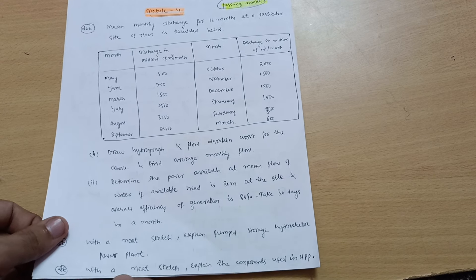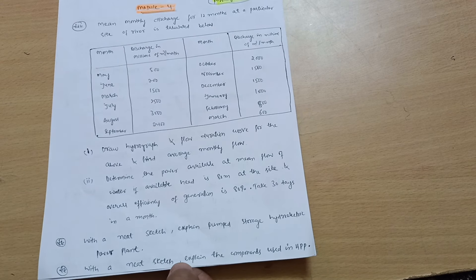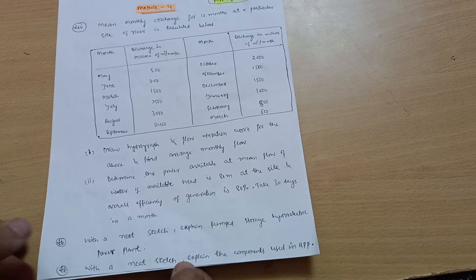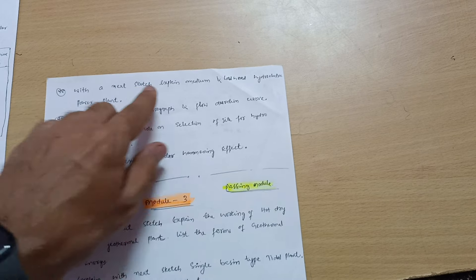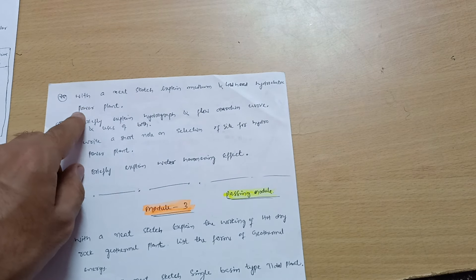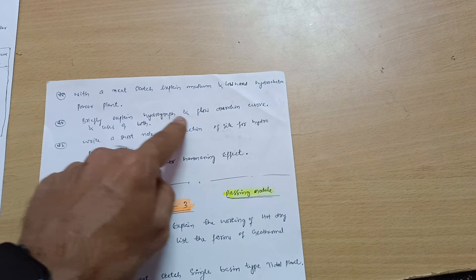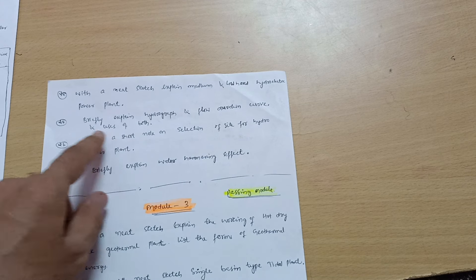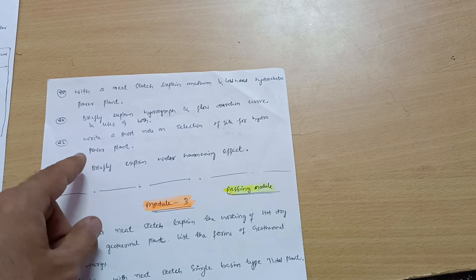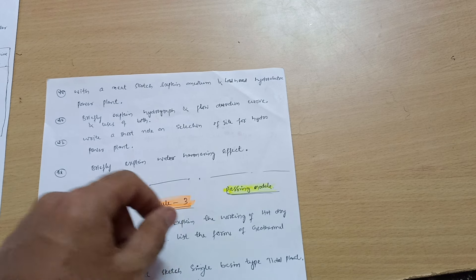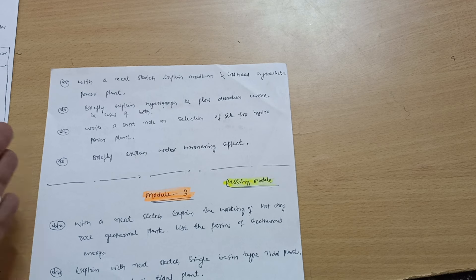Next is with neat sketch explain pumped storage hydroelectric power plant. With neat sketch explain the components used in hydro power plant. Next four questions from Module 4: with neat sketch explain medium and low head hydraulic power plant, briefly explain hydrograph and flow duration and uses of both, write a short note on selection of site for hydropower plant, and briefly explain water hammering effect.